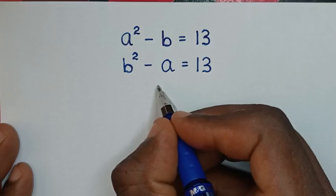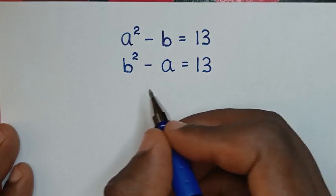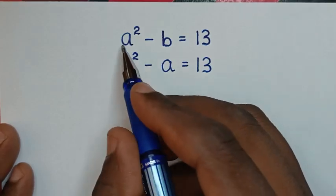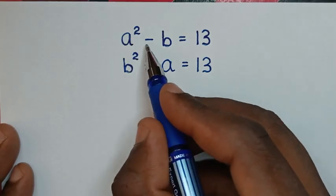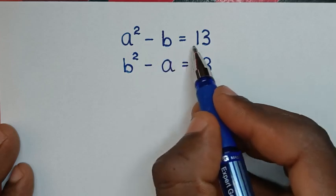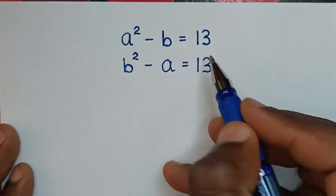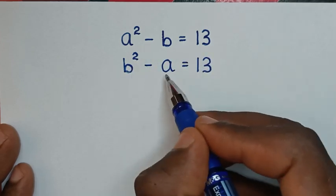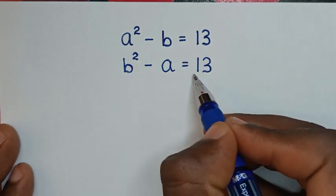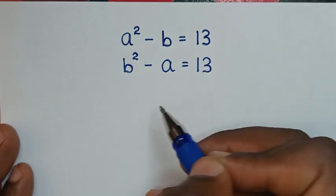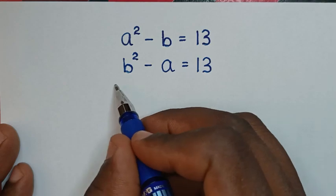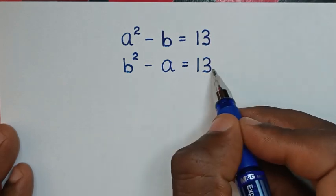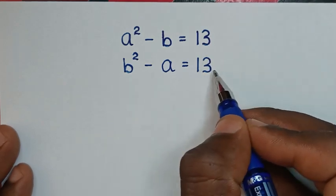Hello, you are welcome to solve this math problem which is a squared minus b is equal to 13, b squared minus a is equal to 13, to find the values of a's and b's from these two systems of equations.